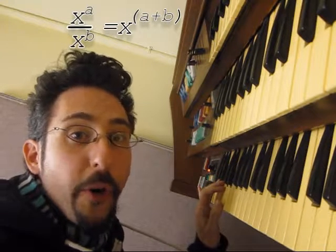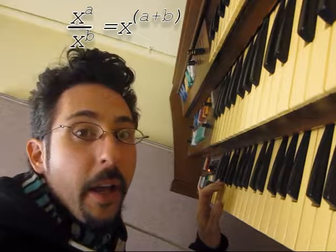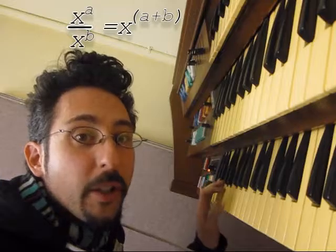X to the a over x to the b can always be x to the a minus b. Dividing makes subtraction.